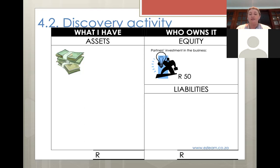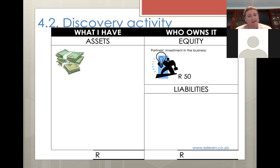Number two - you realize there's not a lot you can buy with 50 rand, so you convince your mom to invest in your brilliant business idea. She agrees to lend you 100 rand on condition that you pay her back with interest of 5 rand at the end of the month. So the 100 rand that she gives you - is it a liability? Yes. Have you had to pay the interest yet? No, it's only at the end of the month - exactly. So we don't stress about it for now.